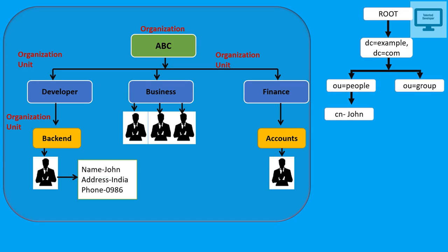Organizational units are also used for admin-level management. Suppose 100 developers need file access — they won't all approach the main network admin. Instead, you create a group and within it a super admin for that developer group only. That super admin handles all access permissions within the developer group, so developers ask that person rather than disturbing the main network admin. Similarly, for different groups, you can assign a single person to control all members of that group.